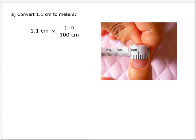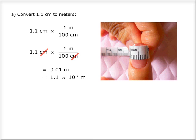We know that there are 100 centimeters in 1 meter. Therefore, if you times 1.1 centimeters by 1 meter and divide by 100 centimeters, the centimeters cancel out and you're left with meters. But you must remember to use the correct number of sig figs — there are 2 significant figures. Therefore, your answer must be 1.1 times 10 to the negative 1 meters.